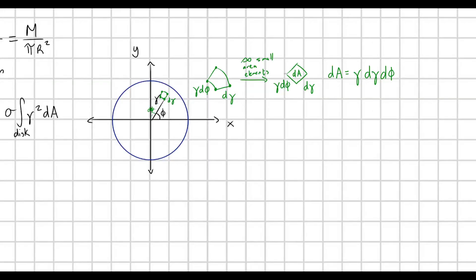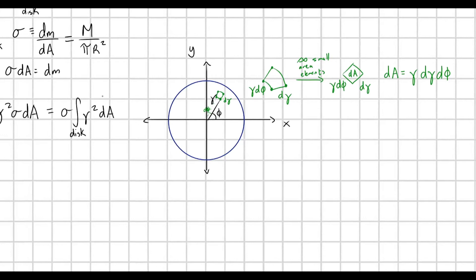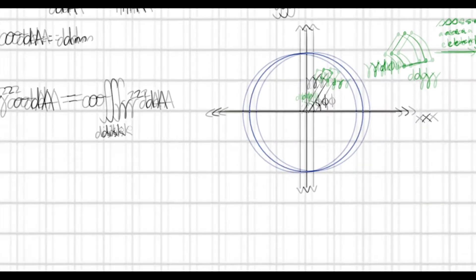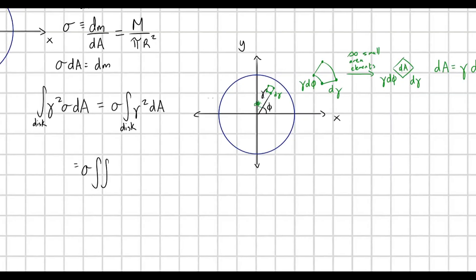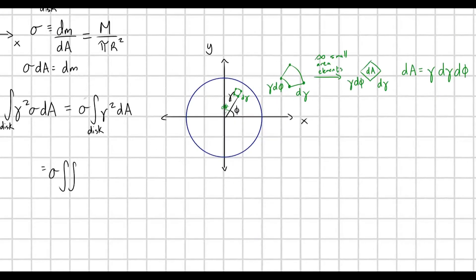And so, that, we're just going to substitute in for dA. So, let's go ahead and rewrite this integral. So, we have sigma times, and now we have a double integral that we're going to have to define the boundaries for, and we'll do that next. But, we have gamma cubed. See, when we plug that in, we're going to get a gamma cubed times d gamma d phi. Awesome!